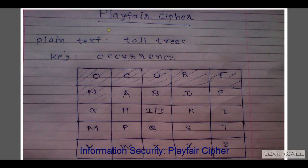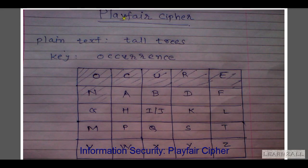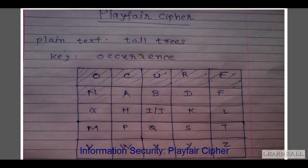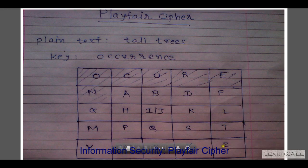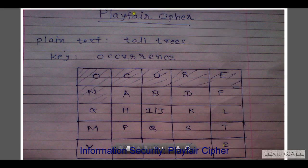Hello friends, during this session we will learn about Playfair cipher. Playfair cipher is an algorithm which uses a 5x5 matrix created using a keyword. For example, the plaintext is 'tall trace' and the keyword is 'occurrence'.